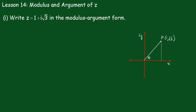Right, in part 1, we have to write z equals 1 plus i root 3 in the modulus-argument form. At the moment, it is in the Cartesian form. So, first of all, we'll work out the modulus. That's this one, that's the r. So, this is 1, and this is going to be root 3.